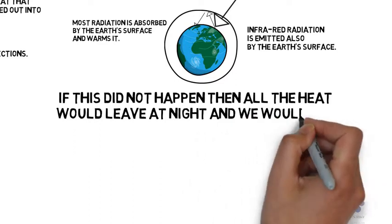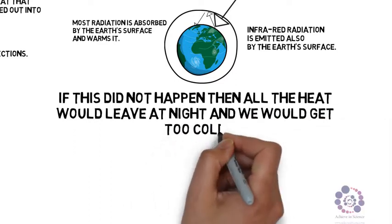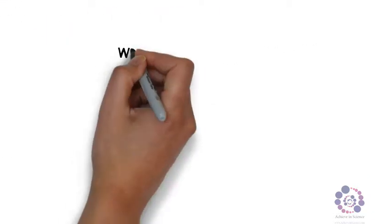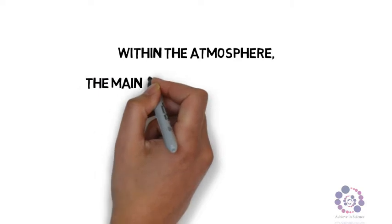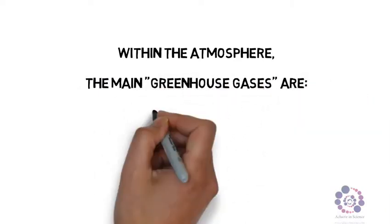So we need to know, what is in the atmosphere? Why is the atmosphere so important? Well within the atmosphere, the main greenhouse gases that allow this process to happen are carbon dioxide and methane.